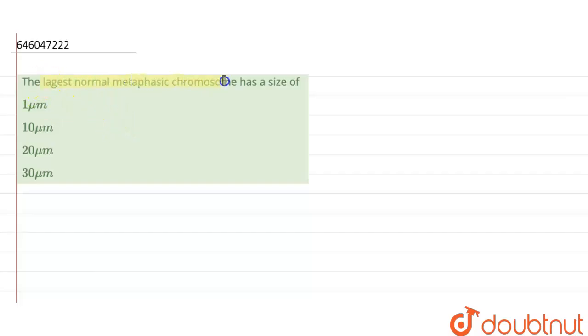The largest normal metaphasic chromosome has a size of - the options are 1 micrometer, 10 micrometer, 20 micrometer, or 30 micrometer.